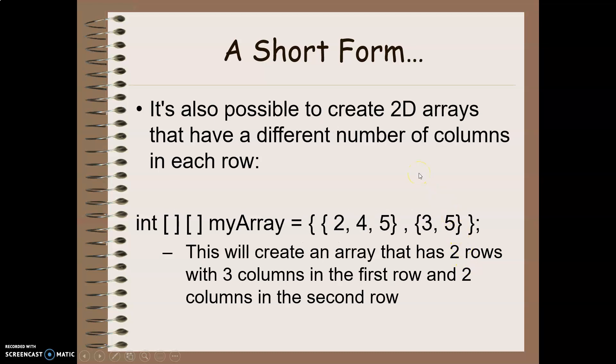It is also possible to have a two-dimensional array that has a different number of columns in each row. Again, I can use an initializer list where I have three elements in the first row, row zero, and only two elements in the second row, row one.